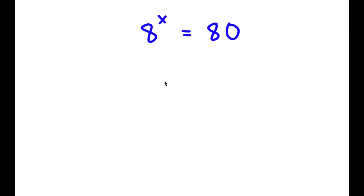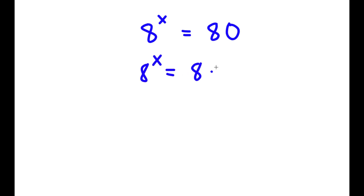In this problem, I have a to the power of x is equal to 80. To solve this, I'm going to first rewrite 80 as 8 times 10. So now I have a to the power of x is equal to 8 times 10.